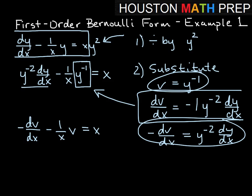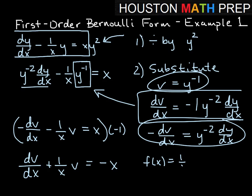And now if I go ahead and get rid of the negative in front here, we'll multiply through everything by negative 1. And so that gives us dv dx plus 1 over xv equal to negative x. So here, f of x now is equal to 1 over x, and g of x is equal to negative x.